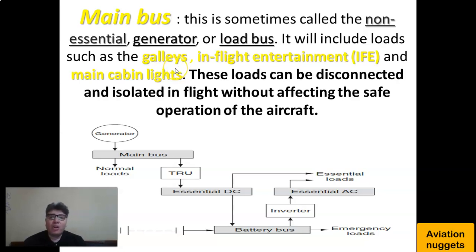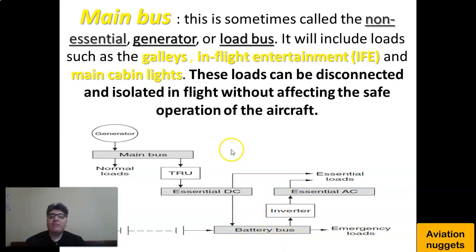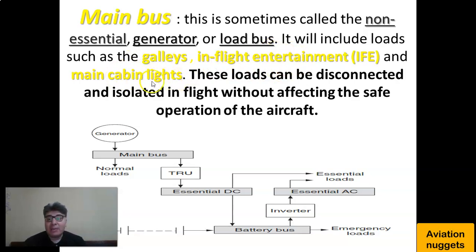The main bus is used to supply normal loads. It is sometimes called the non-essential bus, generator bus, or load bus. It includes loads such as galleys, in-flight entertainment, and main cabin lights. As you can see from these loads, they do not affect the safe operation of the aircraft and can be disconnected and isolated in flight without any safety impact.